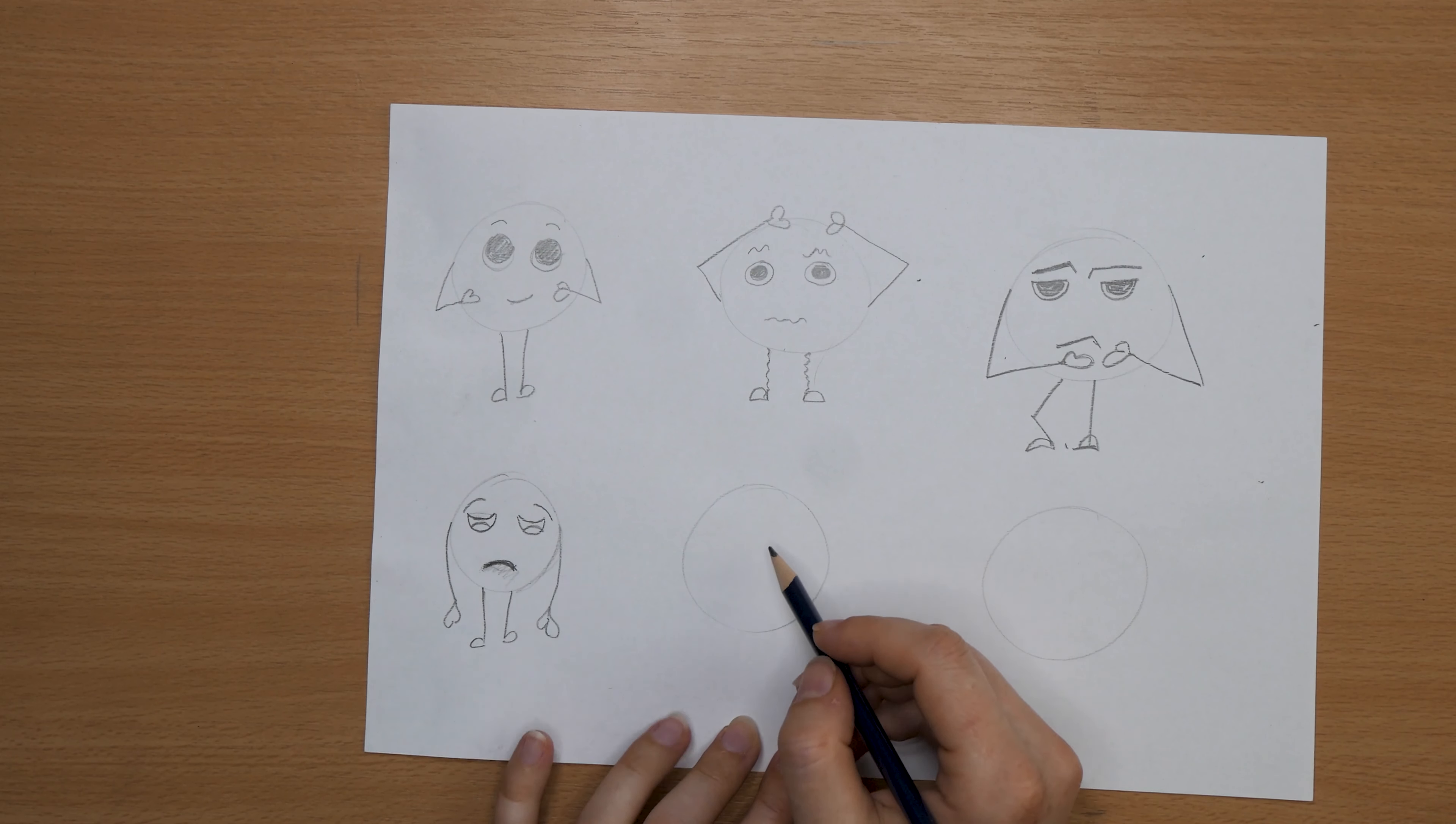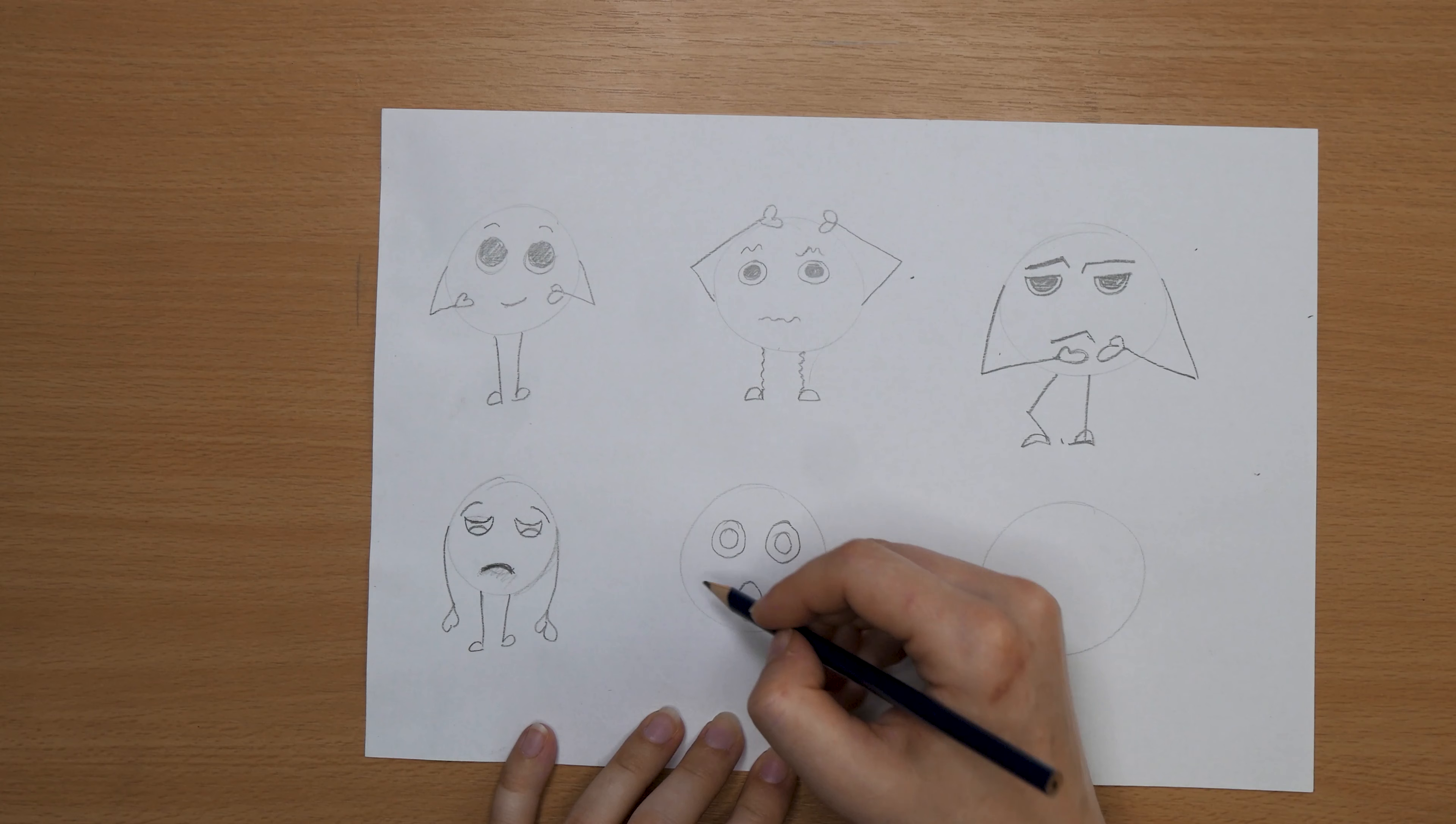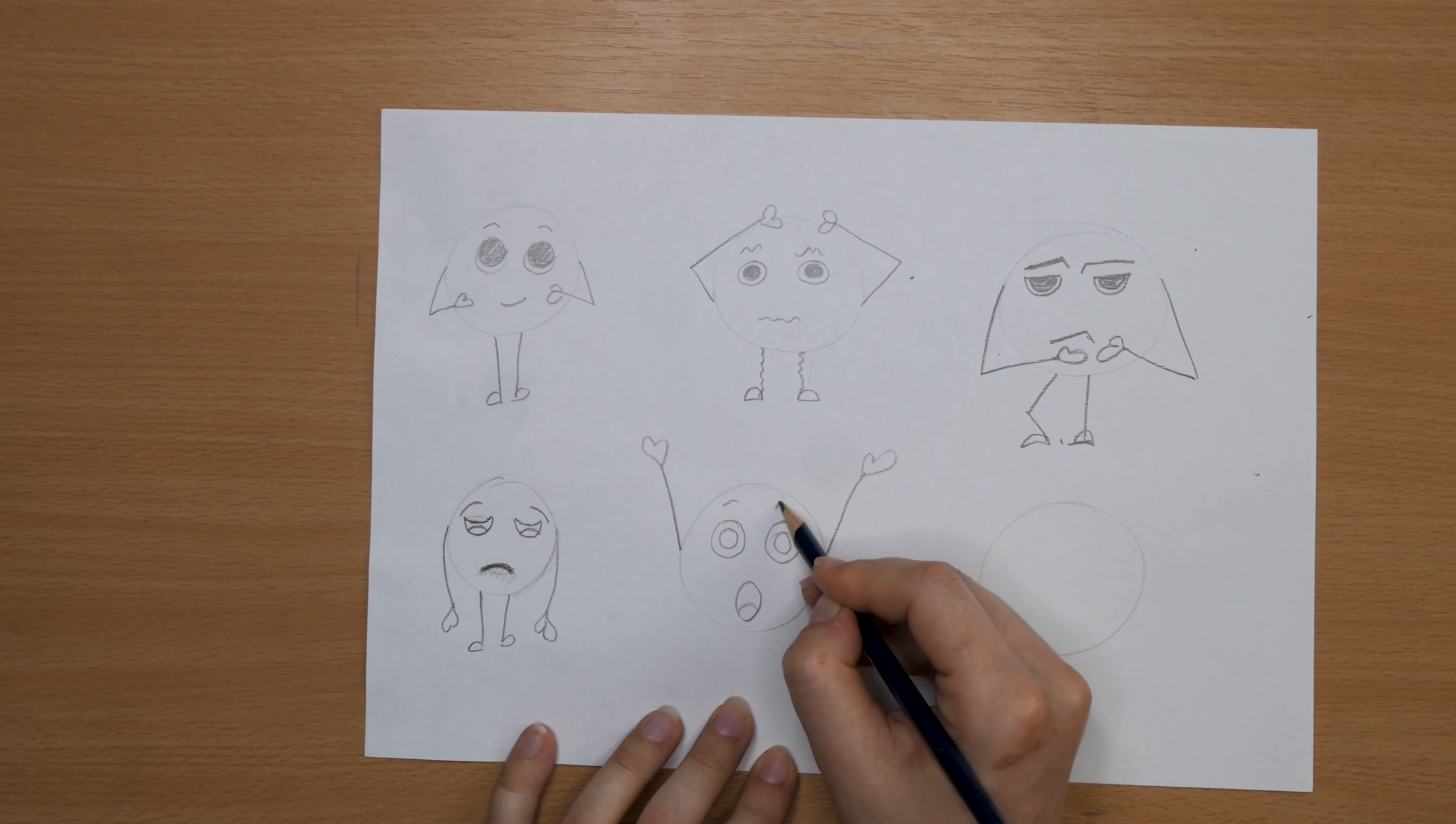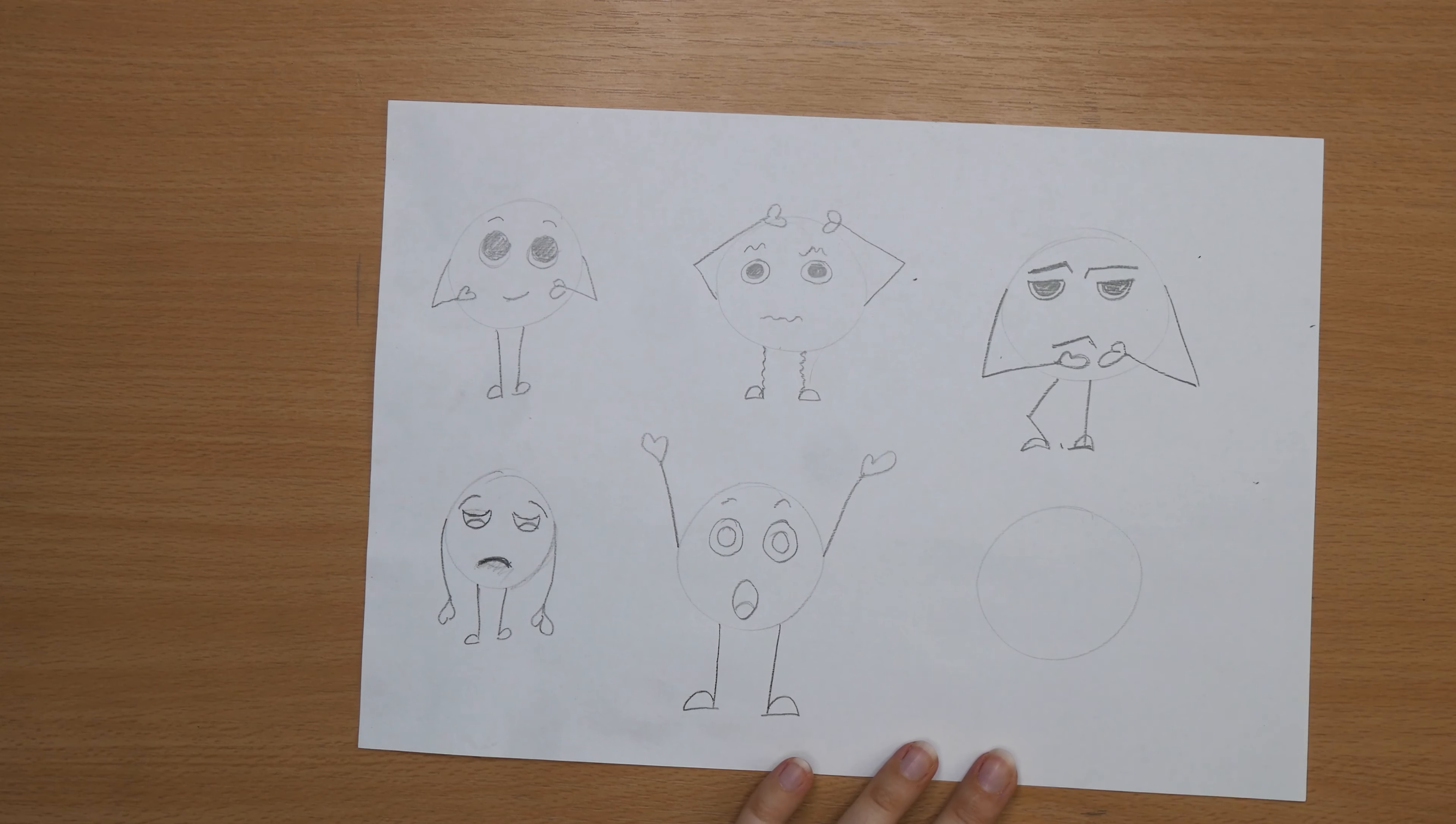Now we can try maybe a surprise character, big wide eyes. And arms up, maybe he's cheering. Eyebrows are up and you can see a distance between them. And then the legs as well, maybe a little more spread, so he's in a certain action.